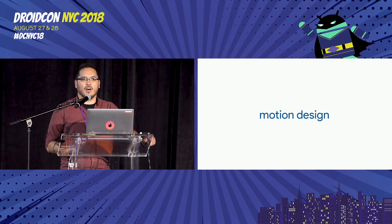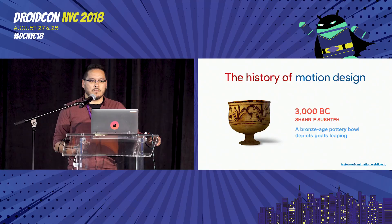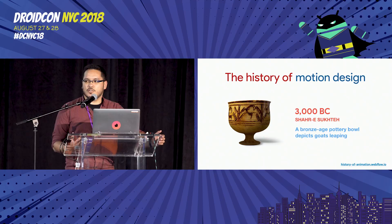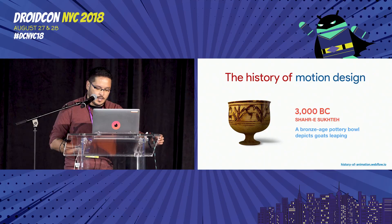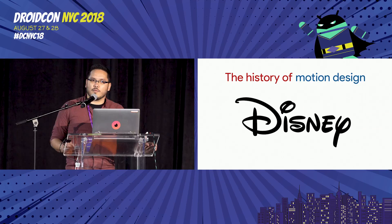So, motion design. I want to start by talking about the history of it and how we came up to something called motion design. A long, long time ago, approximately 3,000 before Christ, we were already trying to bring motion to something we can represent. We have Bronze Age pottery trying to show how goats leap on the farm. We also have the Vitruvian Man from Leonardo da Vinci, which has different angles of the same man to try to show motion. We've been trying to do this since forever — it's not something new.